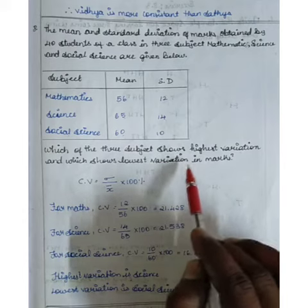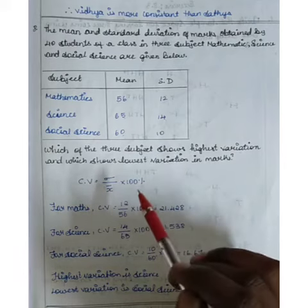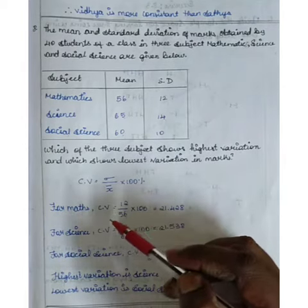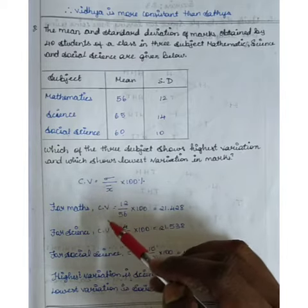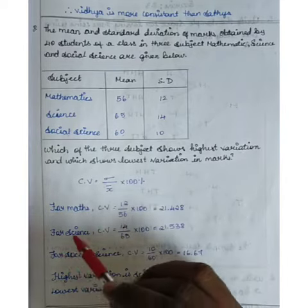We will find the coefficient of variation for each subject. The formula for variation is: standard deviation divided by x-bar, multiplied by 100.